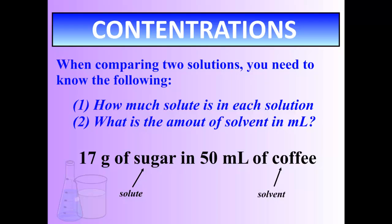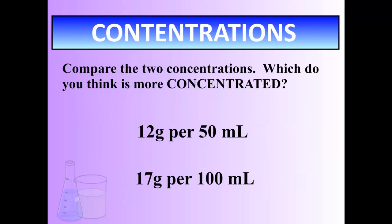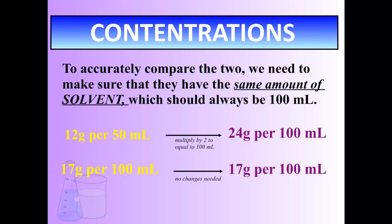Now, if we were to compare two solutions, let's say these two, 12 grams per 50 mils of solute, and 17 grams per 100 mils of solute, which one is more concentrated? We can't really tell right now, because we need to compare both of these in the same volume, the same given volume of solvent. So the first thing we actually need to do is some converting. And we like to pick 100 mils. 100 mils is easy, it's nice and round.